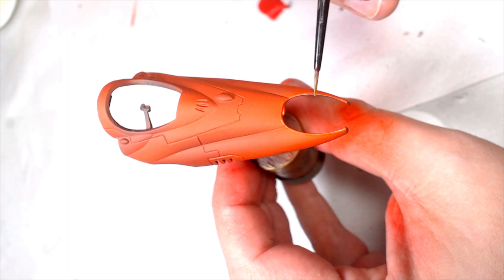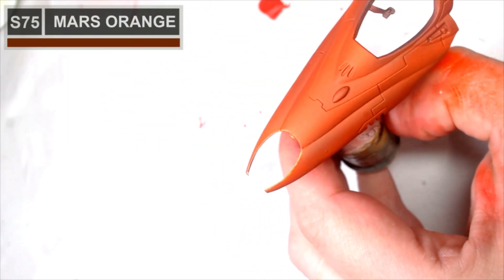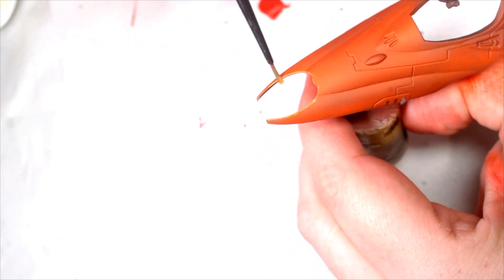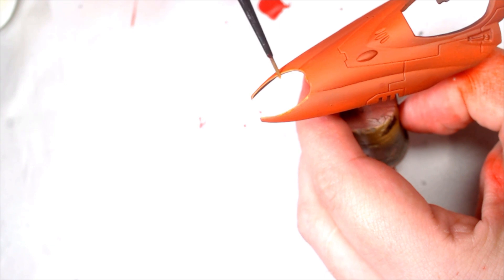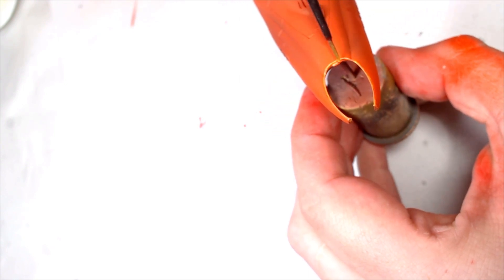So now, by hand, starting to do some edge highlights on the canopy. So this is Mars Orange by Scale 75. The majority of the paints in this tutorial are Scale 75, but there's a lot of very similar colors from Games Workshop. For those of you who don't have access to Scale 75s.